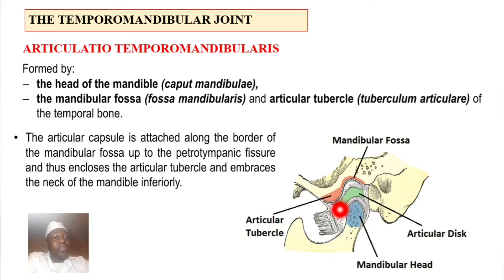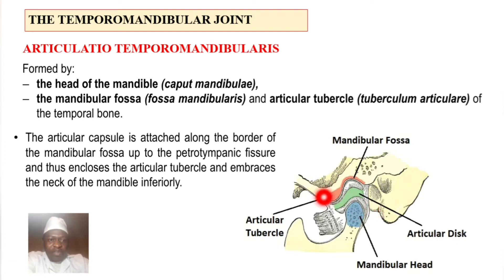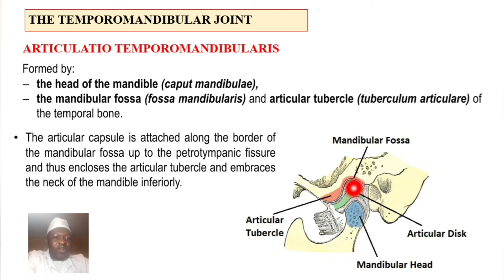You can see the mandibular fossa on the temporal bone and the head of the mandible forming the joint. The articular disc, shown in green, is very important. Anteriorly is the articular tubercle — tuberculum articulare — which prevents anterior dislocation of the joint. The articular disc divides this joint into two compartments: the upper part and the lower part.